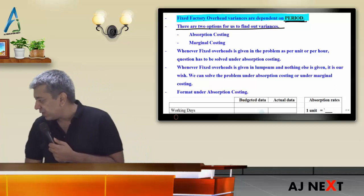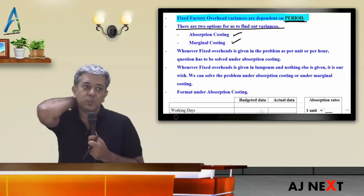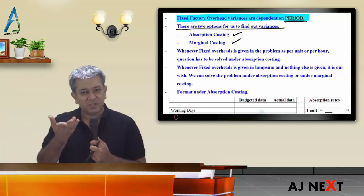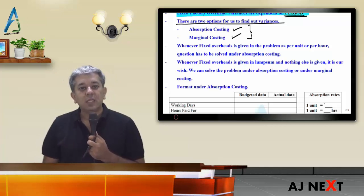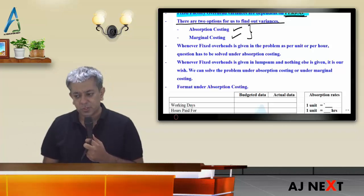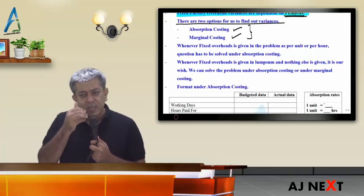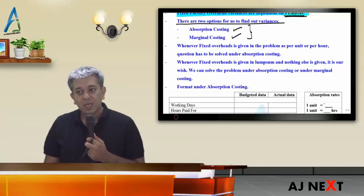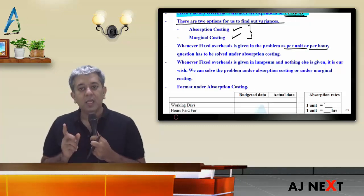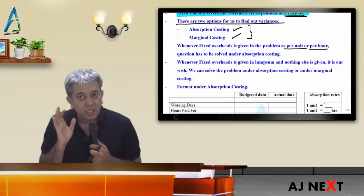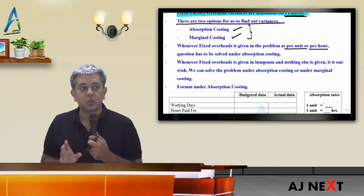You have two options to solve every question. Either you solve under absorption costing — the sum will be a bit larger — or under marginal costing, where they won't ask an independent sum because only one variance comes. How do you know if the sum is on absorption or marginal costing? Sometimes they write 'calculate the variances under traditional system' — traditional system means absorption costing. Sometimes they write 'calculate the variances under relevant costing' — relevant costing means marginal costing.